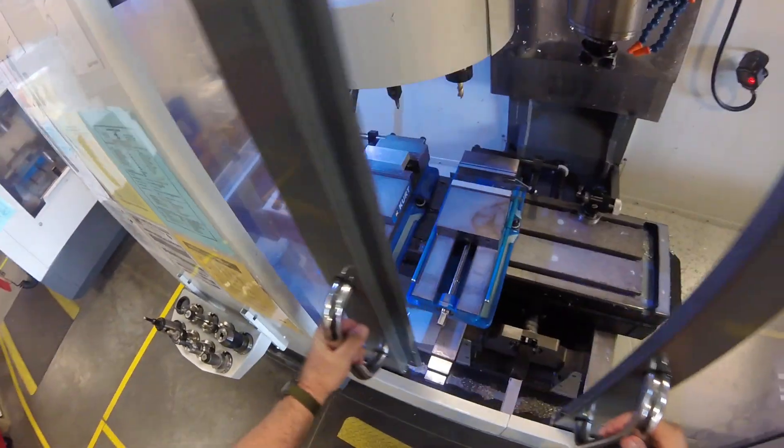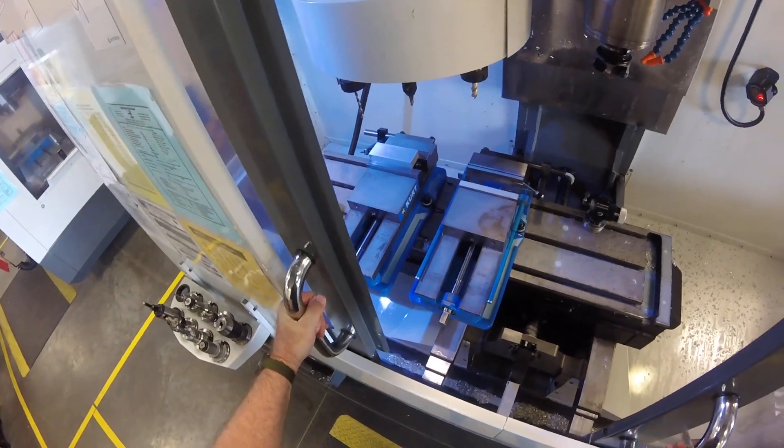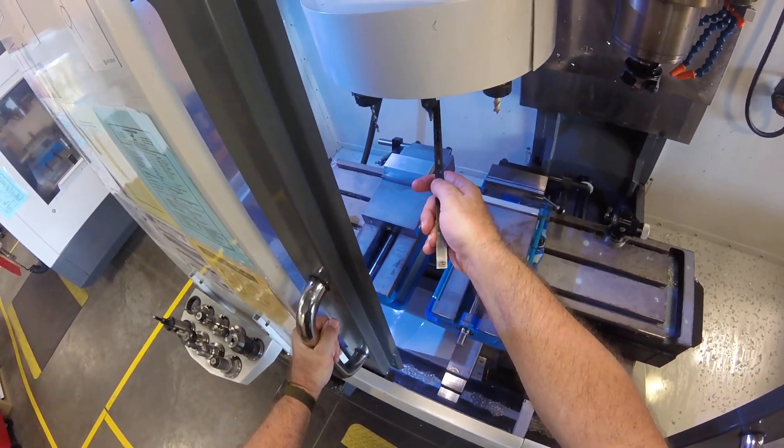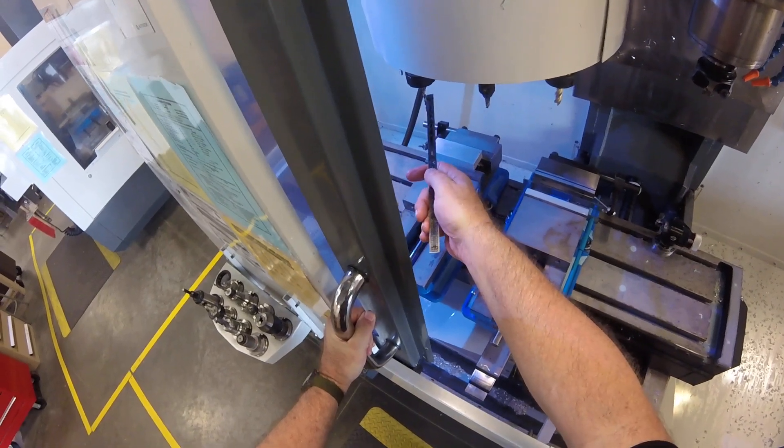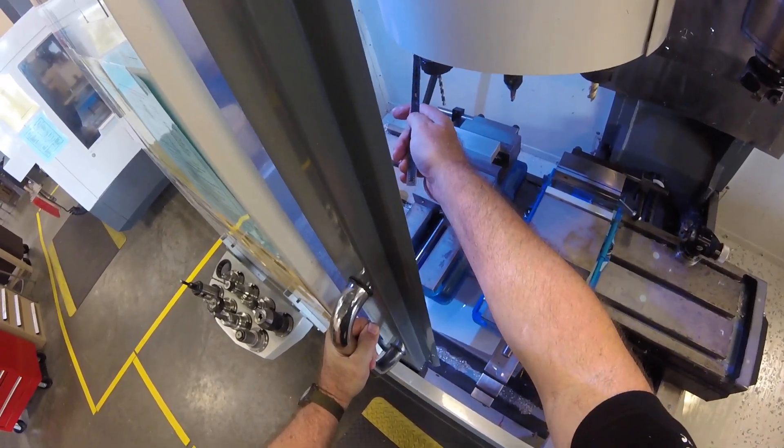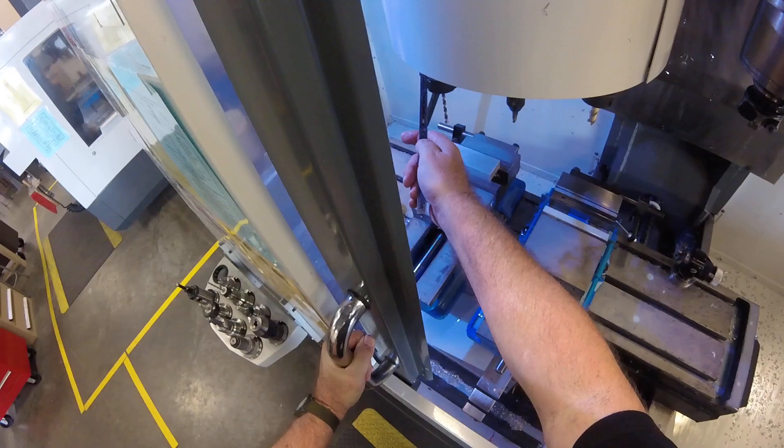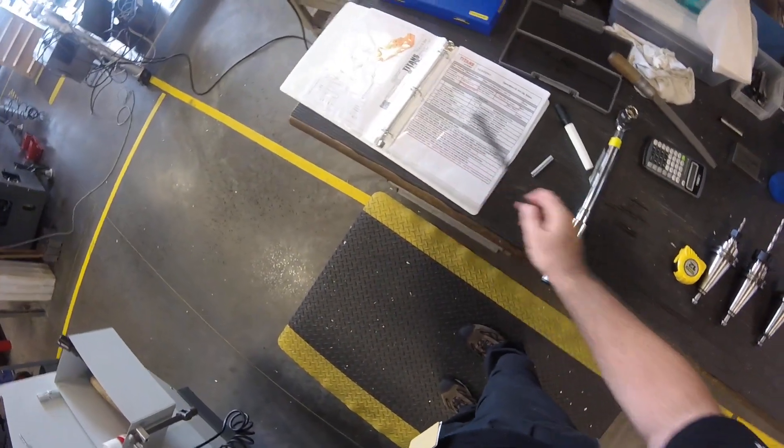Now we're going to do the other tools. And that's a half-inch end mill, 3H chamfer mill, 0.228 drill, and a quarter-dash-20 form tap. Tools are all loaded per setup sheet.